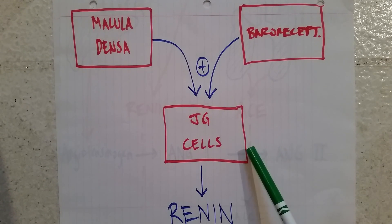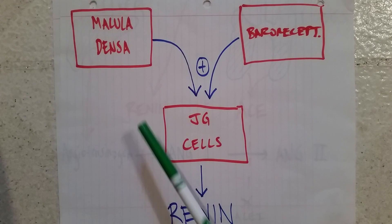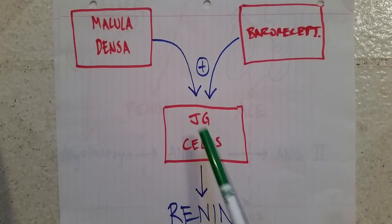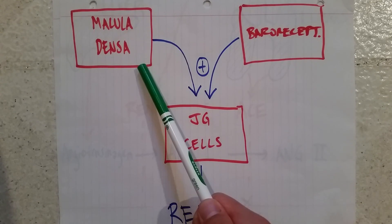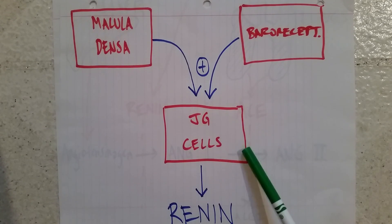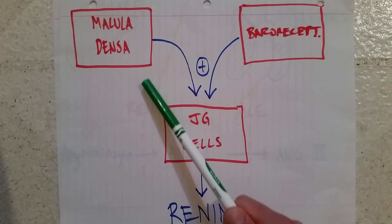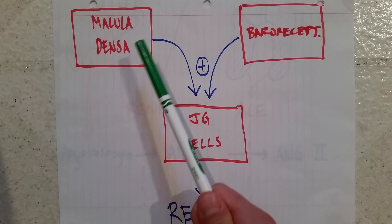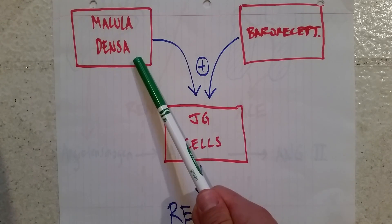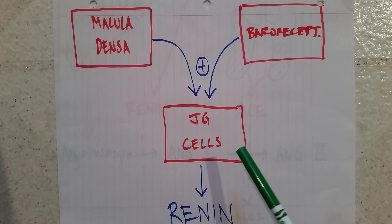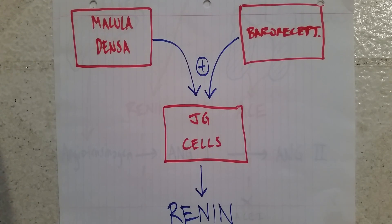If you look at a picture of the nephron, you'll see that in proximity, the macula densa cells in the distal convoluted tubule and the JG cells in the afferent arteriole are actually right next to each other. That's how the prostaglandins made by the macula densa cells can diffuse into the JG cells and activate them to make more renin.